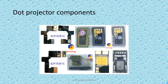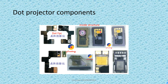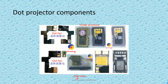Next, dot projector components. This is the dot projector flex cable, FPC — front side, back side. Inside is a structure — look here, the projector, the back side. We remove the cover and separate the dot projector to see inside. This is the back view of this one.